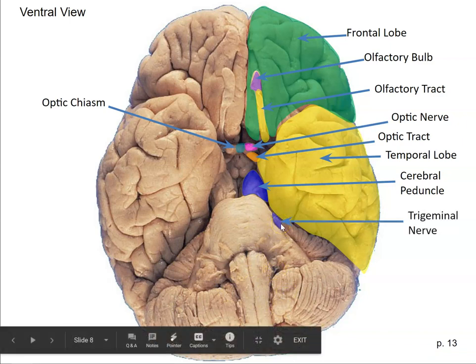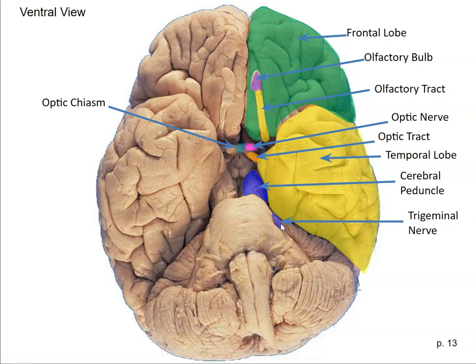Here we have the stump of the trigeminal nerve. Remember that everything in the brain is bilateral — you have more or less the same structure on both sides. Here's the trigeminal nerve on the left side of the brain, and here's the stump on the right. This is a big bundle of axons that branches off into three heads — which is where it gets its name — sending movement signals to parts of the face and jaw, and carrying touch signals from the mouth, face, and jaw back to the brain.